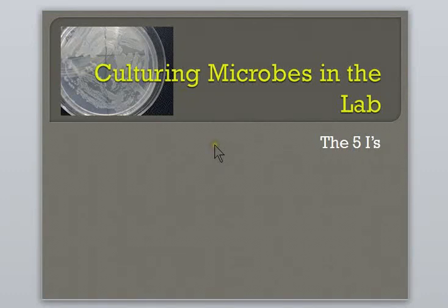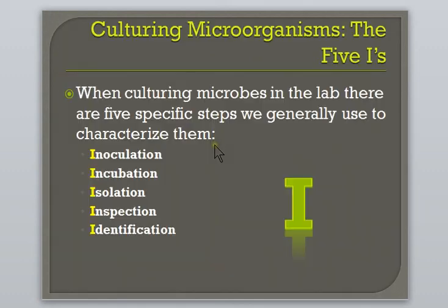As part of Module 1, it is important to understand the process of culturing microbes in the lab. When culturing microbes, especially bacteria, in the laboratory setting, there are five steps that are generally used. These steps are referred to as the five I's, as each step starts with the letter I.